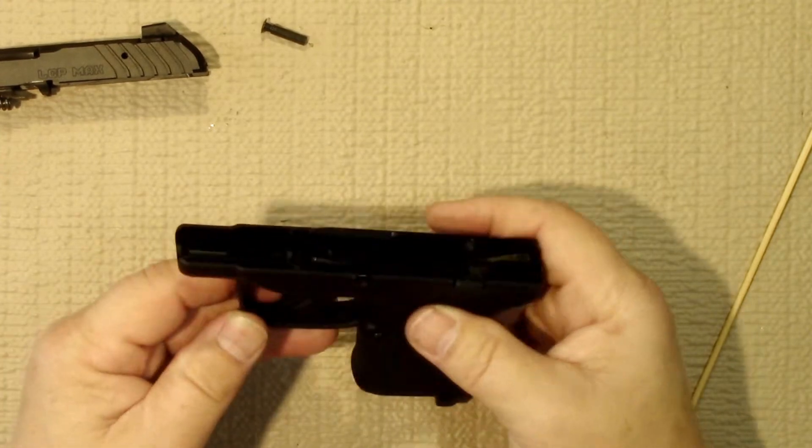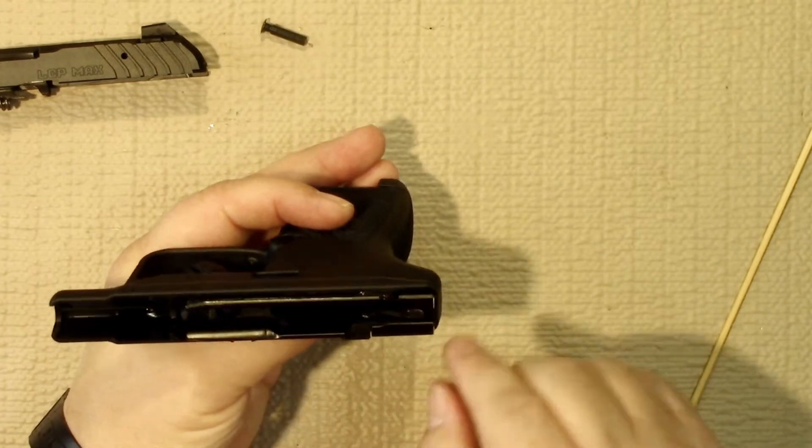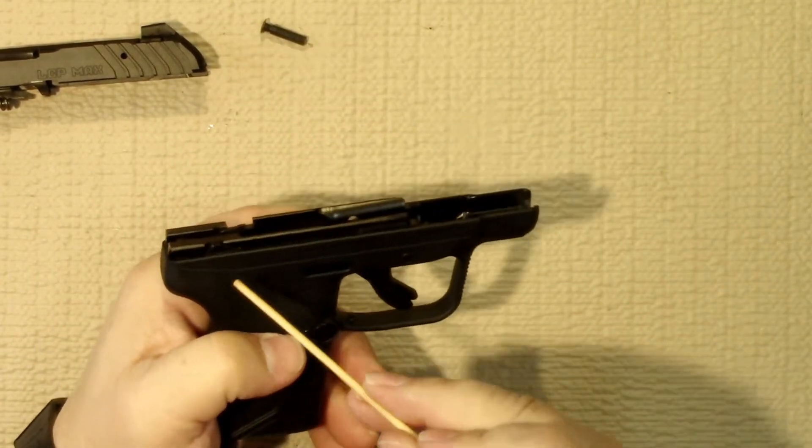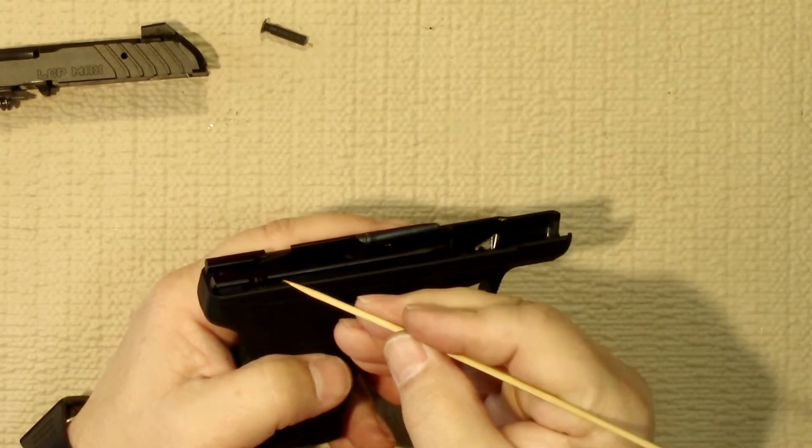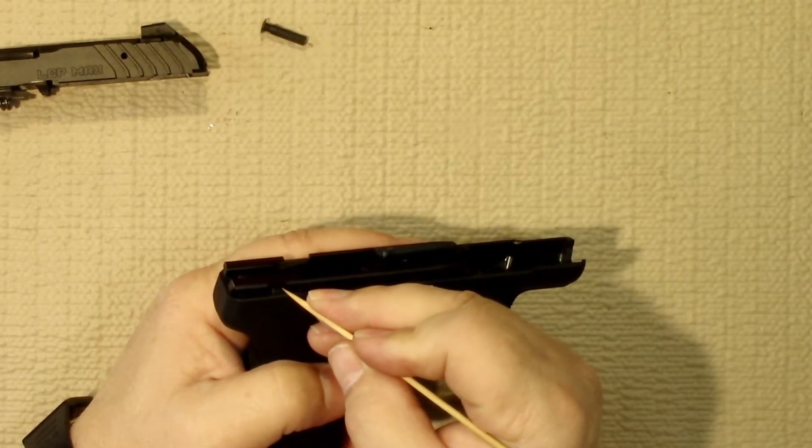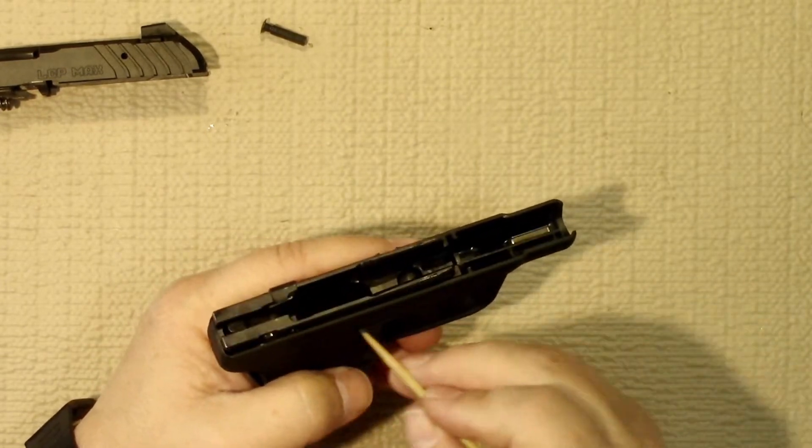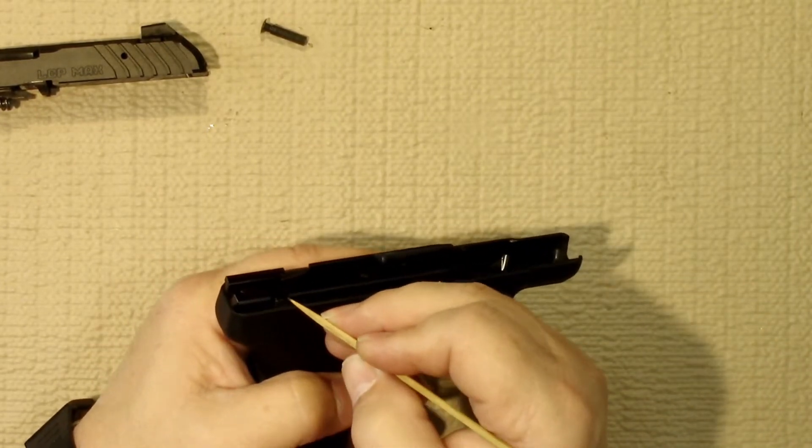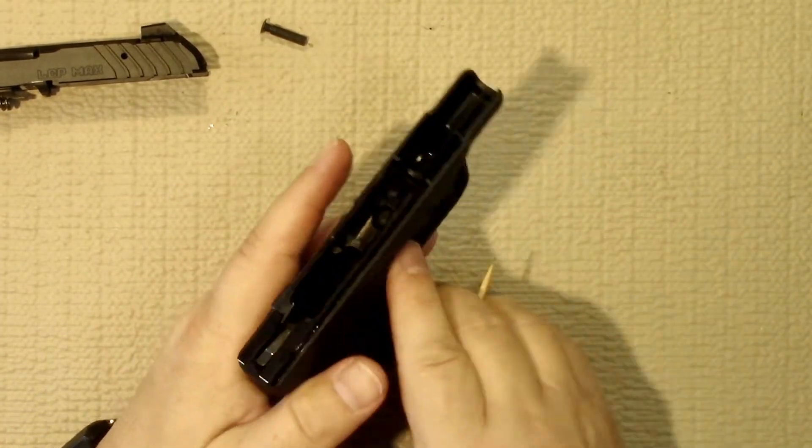That's pretty much as far as you would want to strip this down. You get access to everything to clean it out real good. This is the disconnector right here. When you pull the trigger back, when the slide comes back it pushes down on that, which releases the sear and the trigger from connection. That allows it to operate as semi-automatic. Make sure everything's nice and clean, wipe it all down.